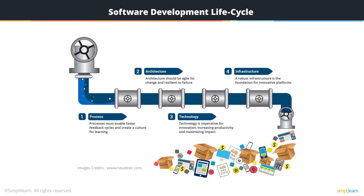For technology, you should have the right tools and the necessary software that makes it possible for you to create an SDLC pipeline. You need an appropriate robust infrastructure such as servers, cloud environments, virtual machines, and various innovative platforms that enable creation, setup, and working of a pipeline, and eventually deploying the software into your production environment and on into an environment that your users can access.